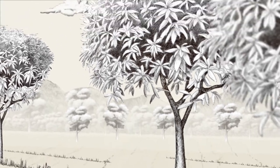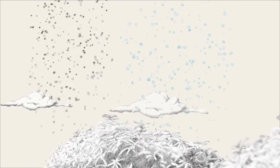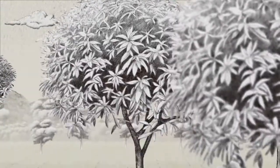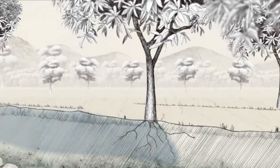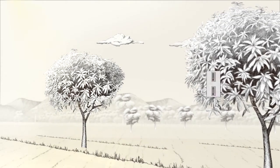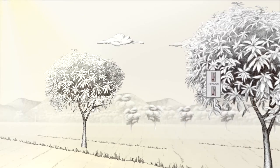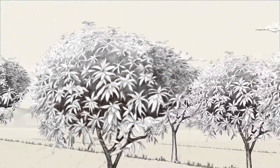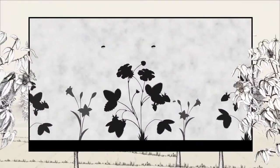Plants produce the oxygen that we breathe and absorb carbon dioxide, retain the soil and moisture, help regulate temperatures, and especially, they maintain the food chain.